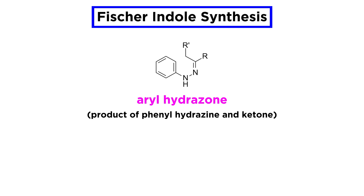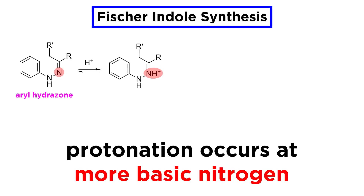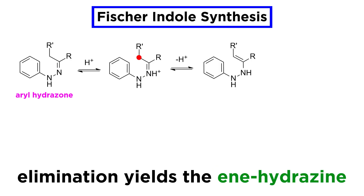Here is the result of the first step, involving phenylhydrazine and some ketone of at least four carbons. We begin with the acid catalysis and shuffling of protons. First, this nitrogen is protonated, it being more basic since its lone pair is not tied up in resonance with the neighboring ring like the other nitrogen. Then a proton is lost at this beta position, putting a pi bond here and neutralizing the nitrogen, to yield this enhydrazine.